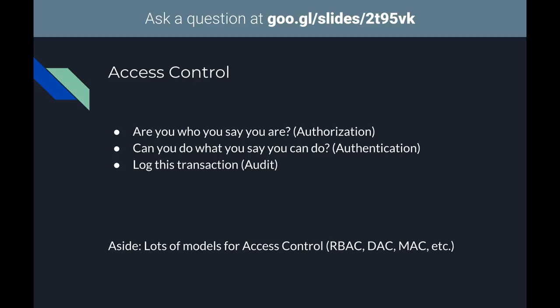Logging is also useful to identify when an account has been compromised — if Alan's account goes on a rampage it's useful to trace it back. There are many models for access control. The more proper examples are RBAC — role-based access control, prevalent in Active Directory domains; DAC — discretionary access control, prevalent in file systems like Unix or Windows; and MAC — mandatory access control, prevalent in government and top-secret domains.